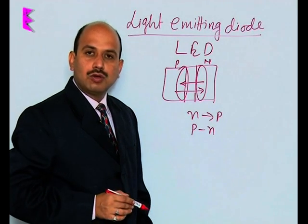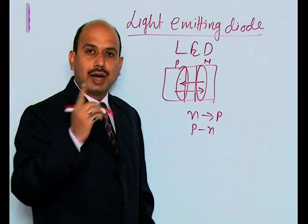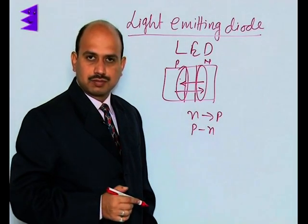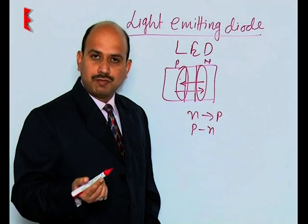Due to increase in the concentration of minority carriers, these minority carriers near the junction start recombining with the majority carriers. During the recombination of the majority carriers, energy is released in the form of photons.